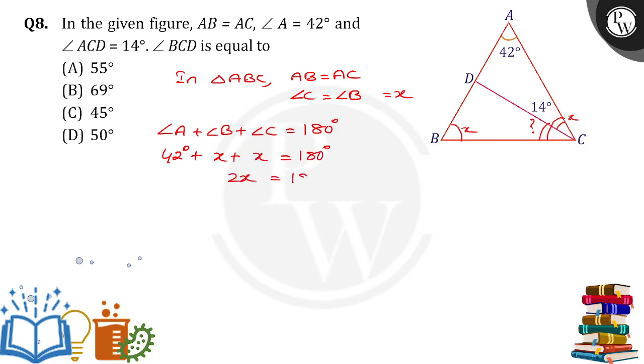2X is equal to 180 minus 42, which is 138 degrees. 180 minus 42 is 138. Then X equals 138 divided by 2, which gives X value as 69 degrees.